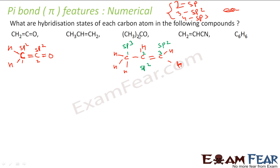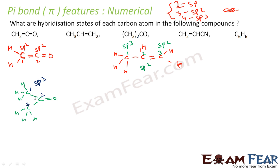Let's take the next example with two CH3 groups. Let me number the carbons as 1, 2, and 3. Carbon 1 is linked to 4 atoms so it is Sp3. Carbon 2 is linked to 1, 2, and 3 atoms so it is Sp2. Carbon 3 is linked to 4 atoms so it is Sp3. Pretty simple.